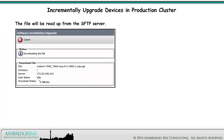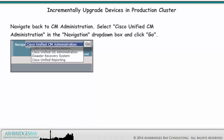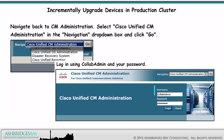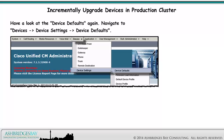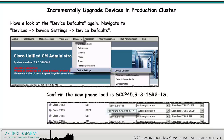The file will be read up from the SFTP Server — click Next. Navigate back to CM Administration by selecting Cisco Unified CM Administration in the Navigation drop-down box and click Go. Log in using Collab Admin and your password. Have a look at the device defaults again: navigate to Devices, Device Settings, Device Defaults, and confirm that the new phone load is correct.